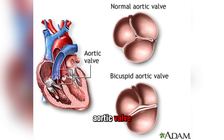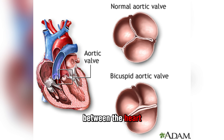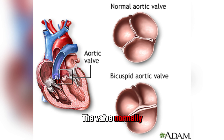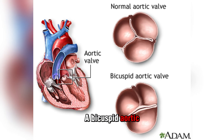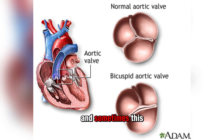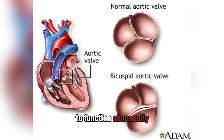4. Bicuspid Aortic Valve: The aortic valve is a one-way passageway between the heart and the aorta. It normally has three flaps that open and close to regulate blood flow. A bicuspid aortic valve has only two flaps, and sometimes this causes the valve to function abnormally.